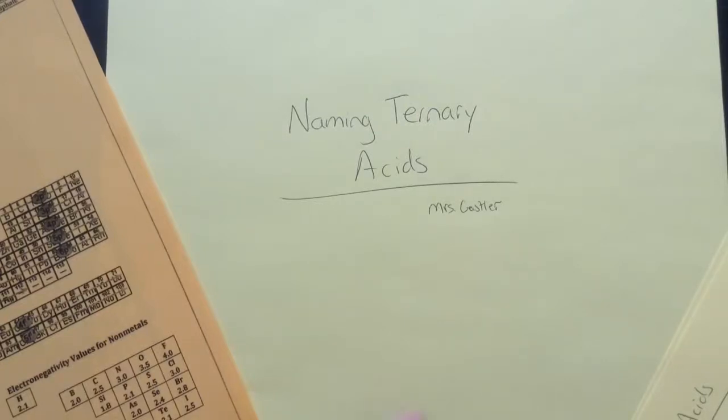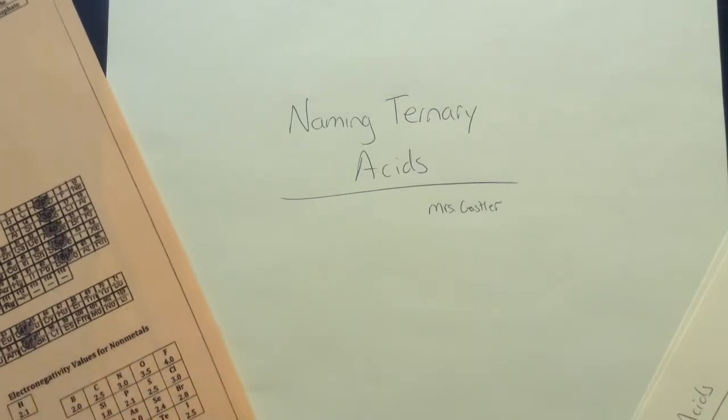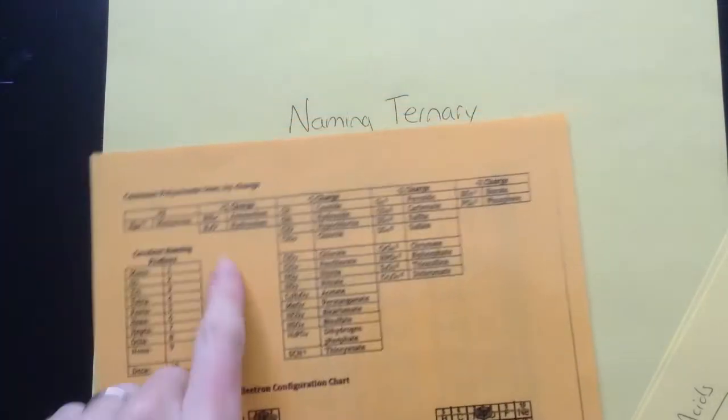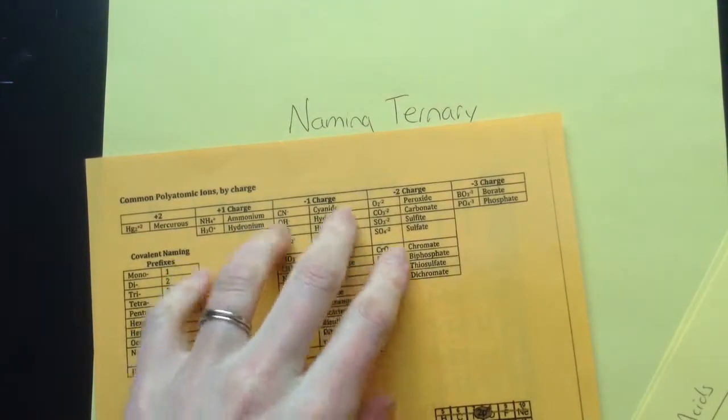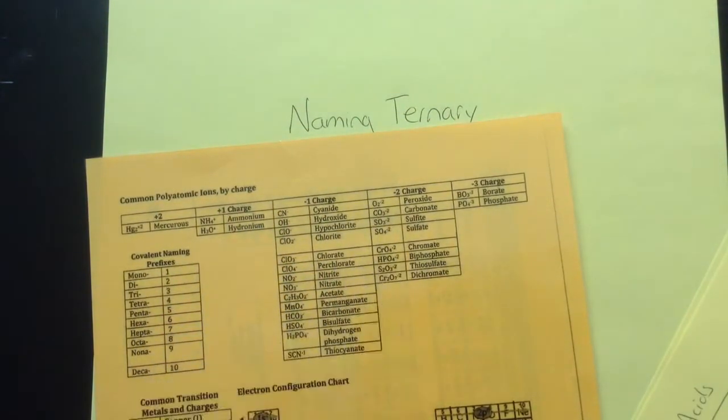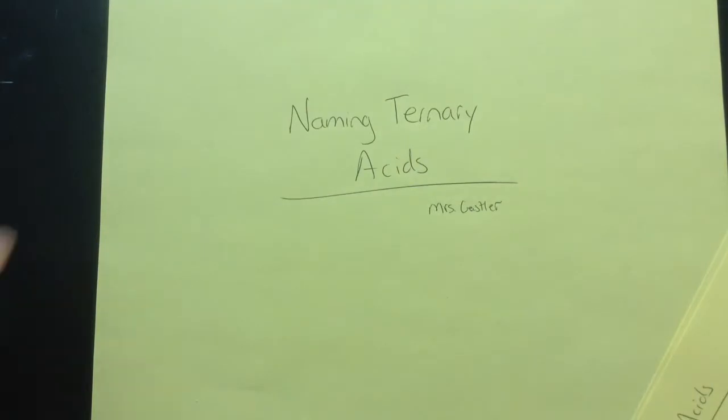Hi guys, this is Mrs. Gassler and in this video we're going to talk about naming ternary acids. These are the ones that have three things, so you are definitely going to want your periodic table that has your list of the common polyatomic ions because these are the ones that are in those ternary acids.